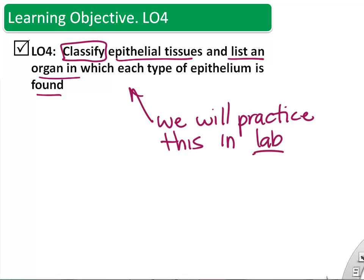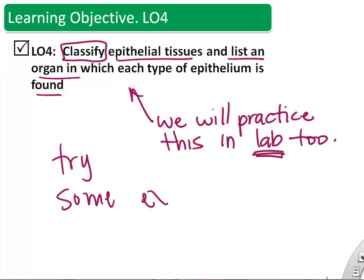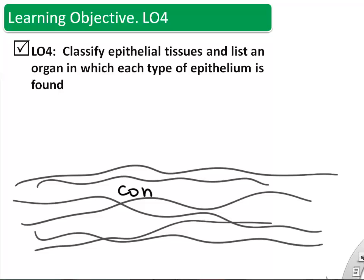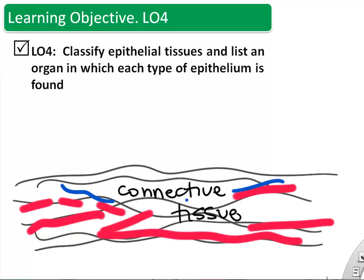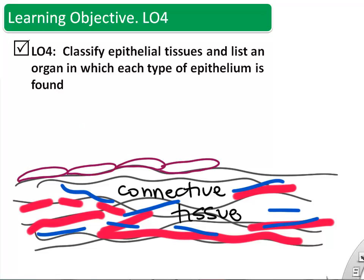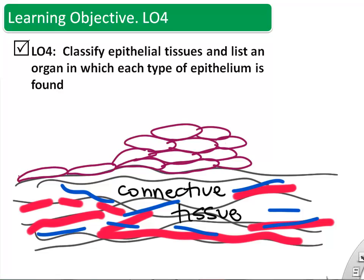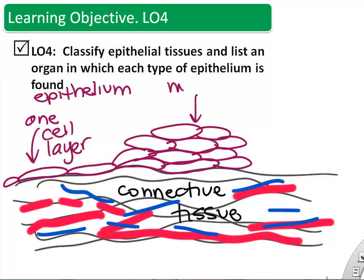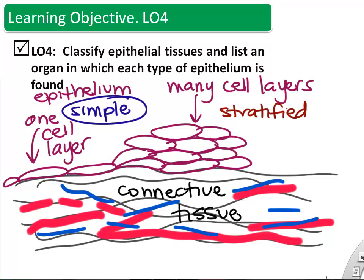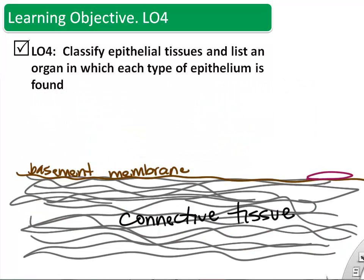The next learning objective is to classify the types of epithelium we see in the body — we'll practice more of this in lab. Remember, we always have connective tissue supporting epithelium. We draw epithelial cells — in this case flat cells — either in a single cell layer or stacked. When there's one cell layer, we call it simple; when there are many cell layers, we call it stratified. The examples in the heart were simple epithelium — single cell layers.